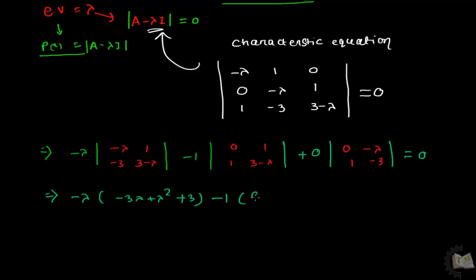Minus 1 times 0 minus 1, and this term is 0. Multiplying minus lambda with it gives plus 3 lambda squared minus lambda cubed minus 3 lambda plus 1 equals 0.